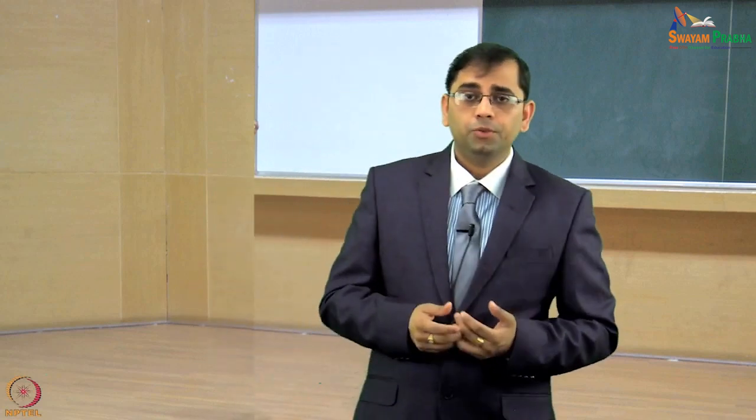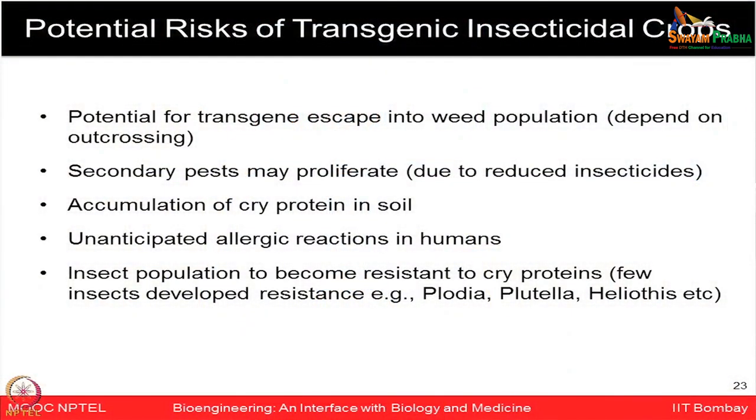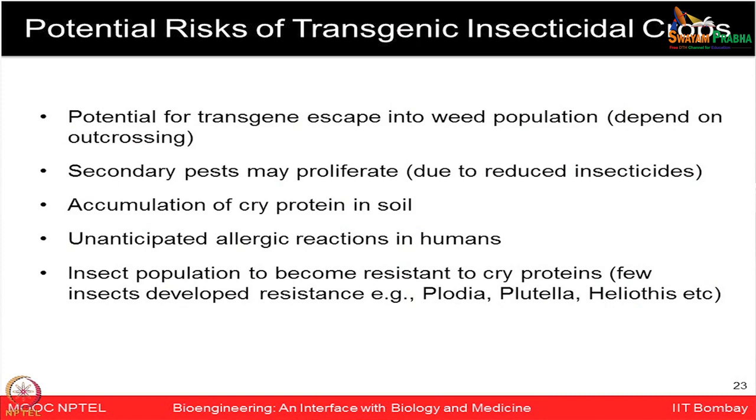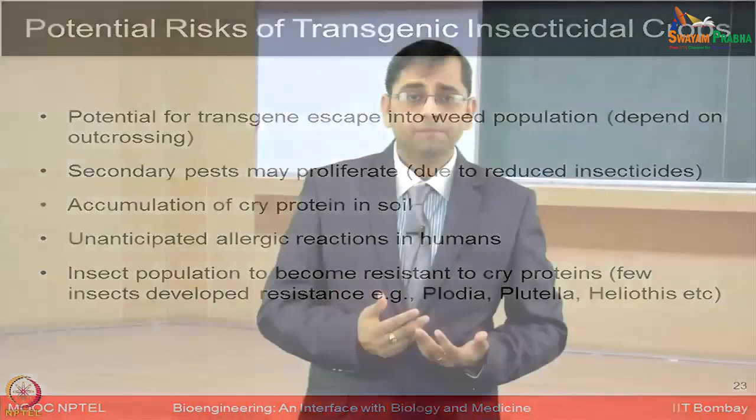However, concerns have been raised about the potential risks of transgenic insecticidal crops. Transgenes could escape into wild populations through outcrossing with neighboring crops. Secondary pests may proliferate when one pest is controlled. Cry proteins might accumulate in soil over time. There could be unanticipated allergic reactions in humans, and insect populations could develop resistance to Cry proteins — with a few such cases already reported.